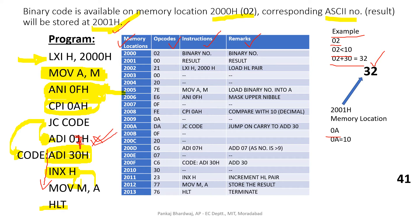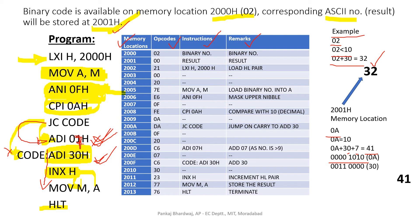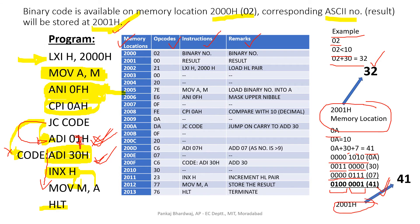For 0A, which equals 10, the carry comes, so ADI 07 is executed. Both 7 and 30 are added: 0A + 07 + 30 = 41. In binary: 0A is 0000 1010, 30 is 0011 0000, and 07 is 0000 0111. Adding them gives the result 41 hex, stored at memory location 2001.